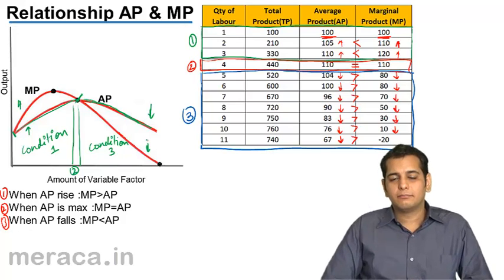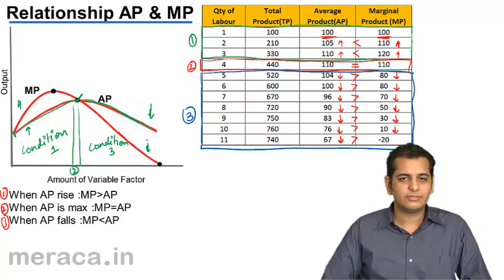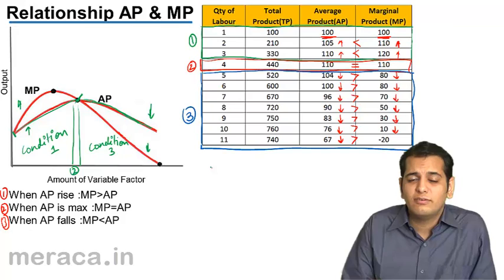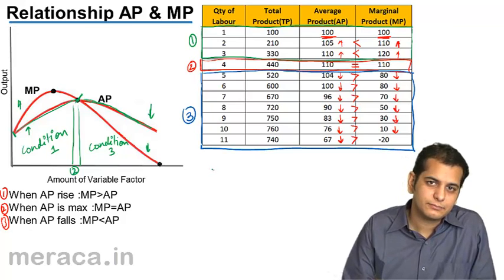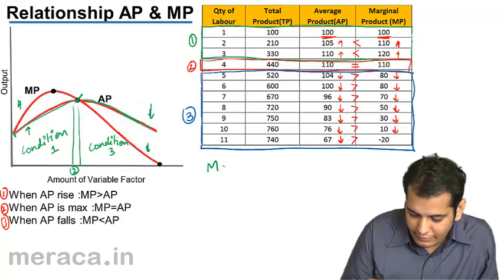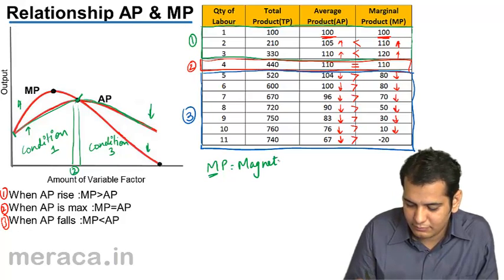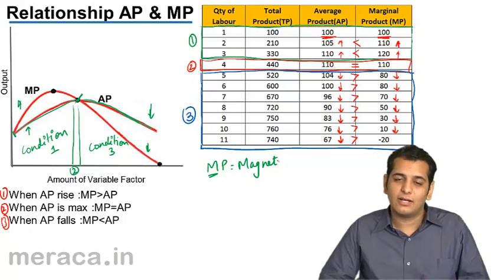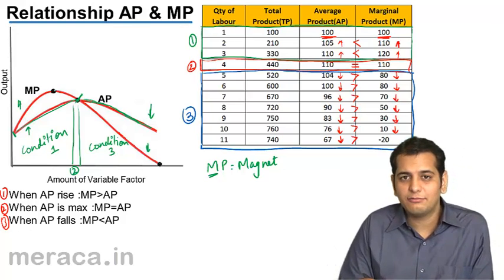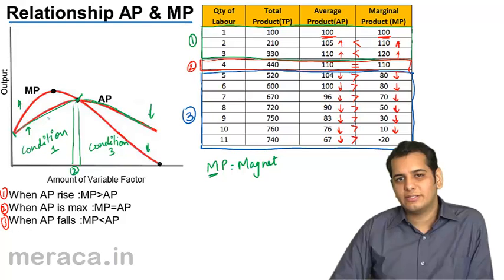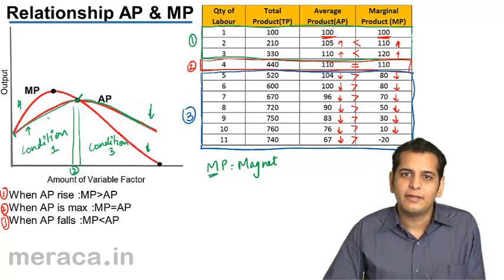Students generally get very confused understanding the relation between MP and AP. So I'll just give you one tip here. Always assume the curve, MP to be a magnet. MP starts with M, assume it to be a magnet. Now, what is the property of the magnet? It attracts other things towards itself. So now, consider in this graph, MP to be a magnet. So what it is doing? It is pulling AP towards itself. It is attracting AP towards itself.